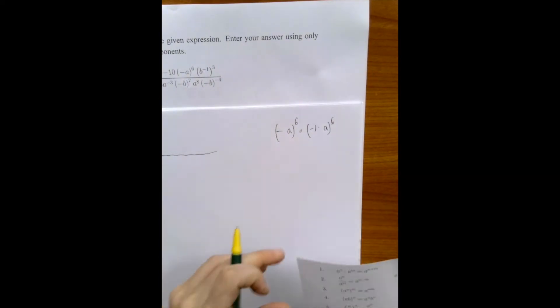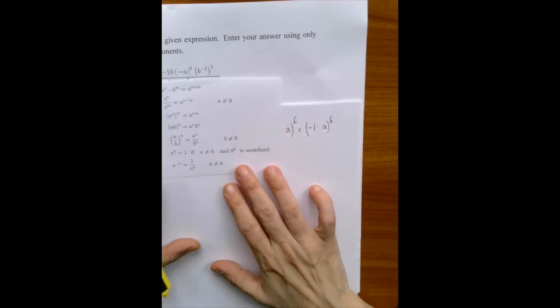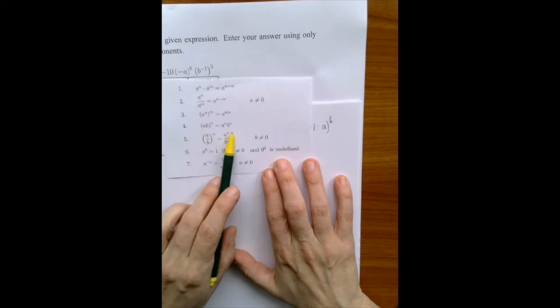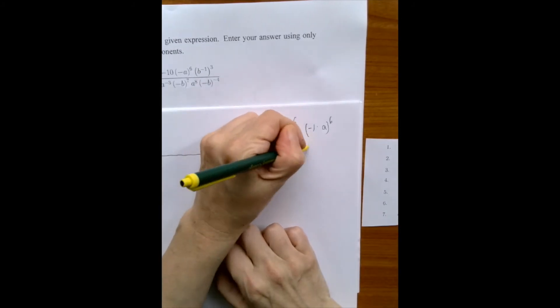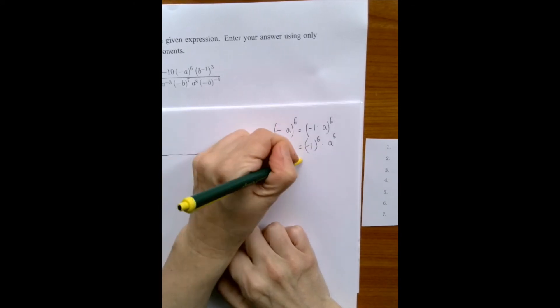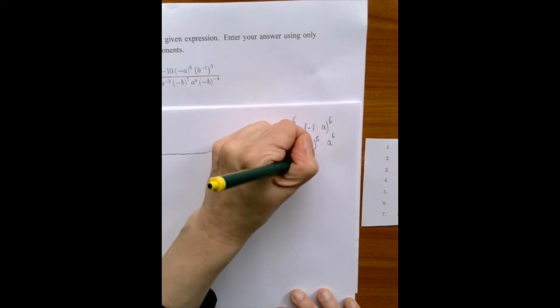So here are the rules of exponents. In this particular case, this fourth rule here can be applied. And then minus 1 to the 6th times a to the 6th. And negative 1 raised to the 6th power is plus 1. So we have a to the 6th.